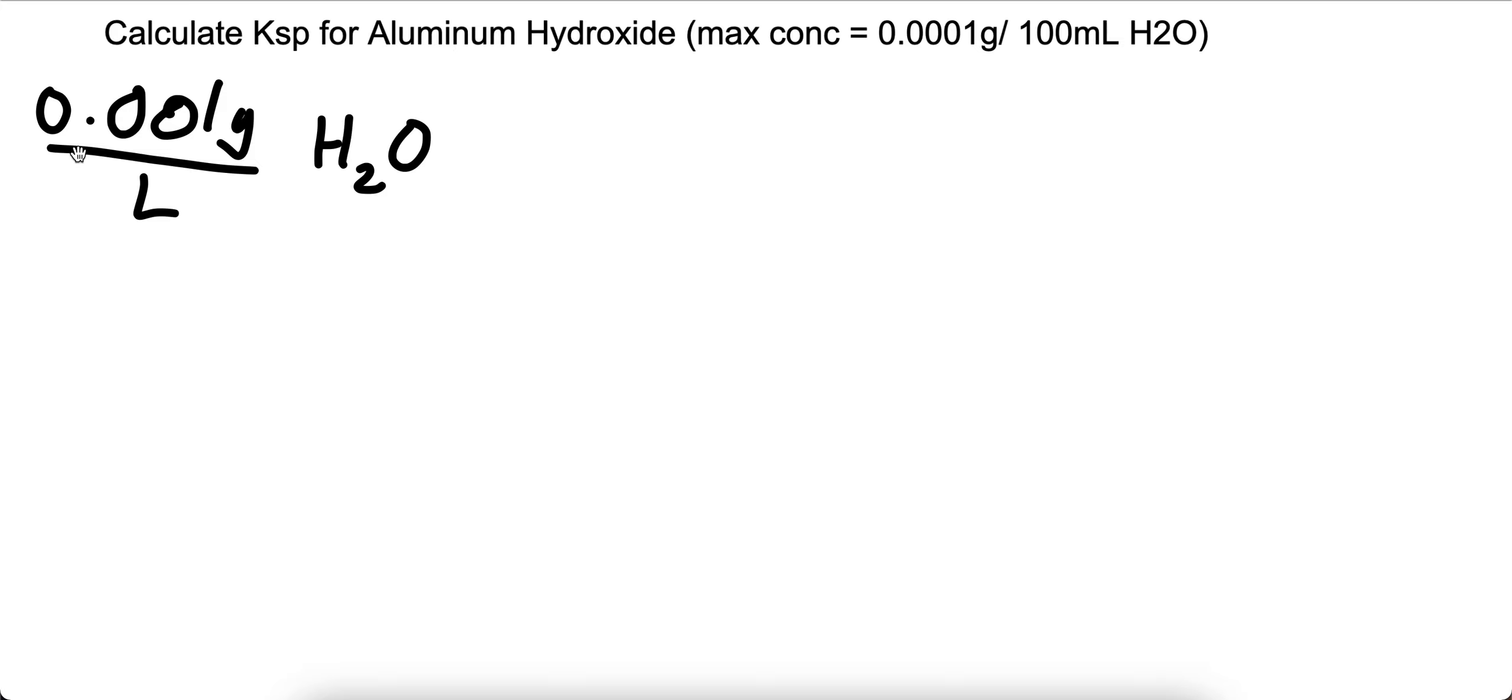That means for one liter of H2O, you'll precipitate 0.001 grams of aluminum hydroxide.